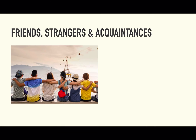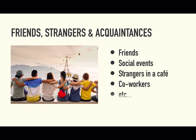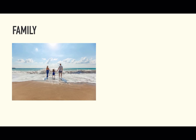The friends, strangers, and acquaintances category involves everyone besides family, which is the last category — covering family members, relatives, spouse, kids, etc.